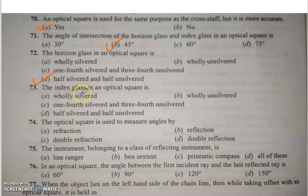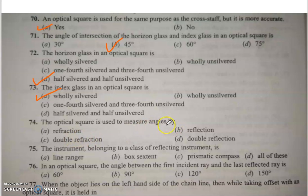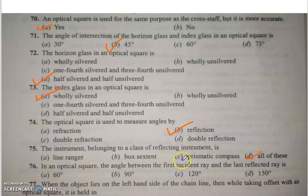Q73: The index glass in an optical square is fully silvered. Q74: The optical square is used to measure angles by reflection. Q75/76: The instruments belonging to the class of reflecting instruments are all of the above: (a) line ranger, (b) box sextant, and (c) prismatic compass.